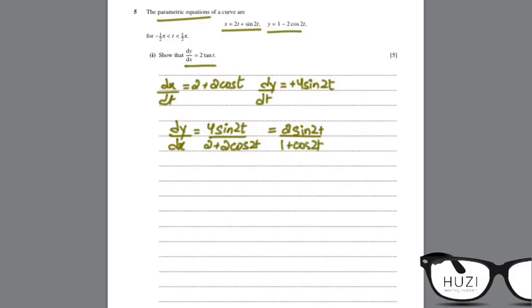We need tan t, so expanding the double angle identities. So this will be 4 sin 2t upon 1 plus 2 cos 2t minus 1.